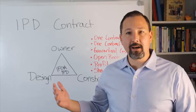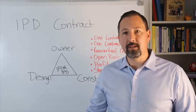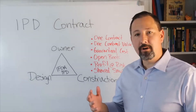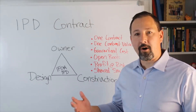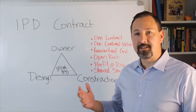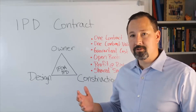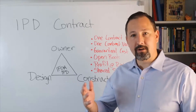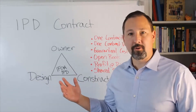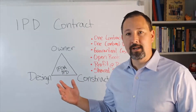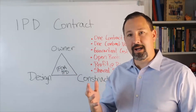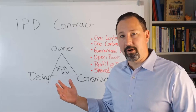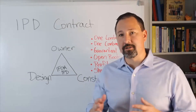I want to share, at a high level, what makes IPD different than other contracts. In this case, the owner, the designer, and the contractor have a single contract. In most cases, the owner contracts with the design party, and then they sign a separate contract with the general contractor or the build party. And then there are a number of subcontracts under the designer and other subcontracts under the builder, so the owner needs to administer two contracts.